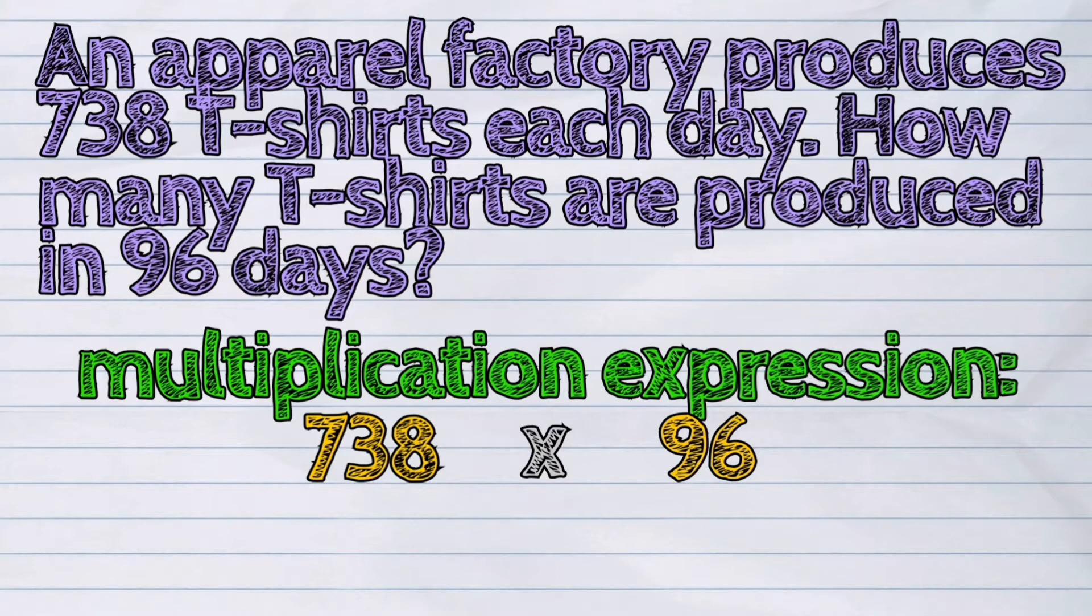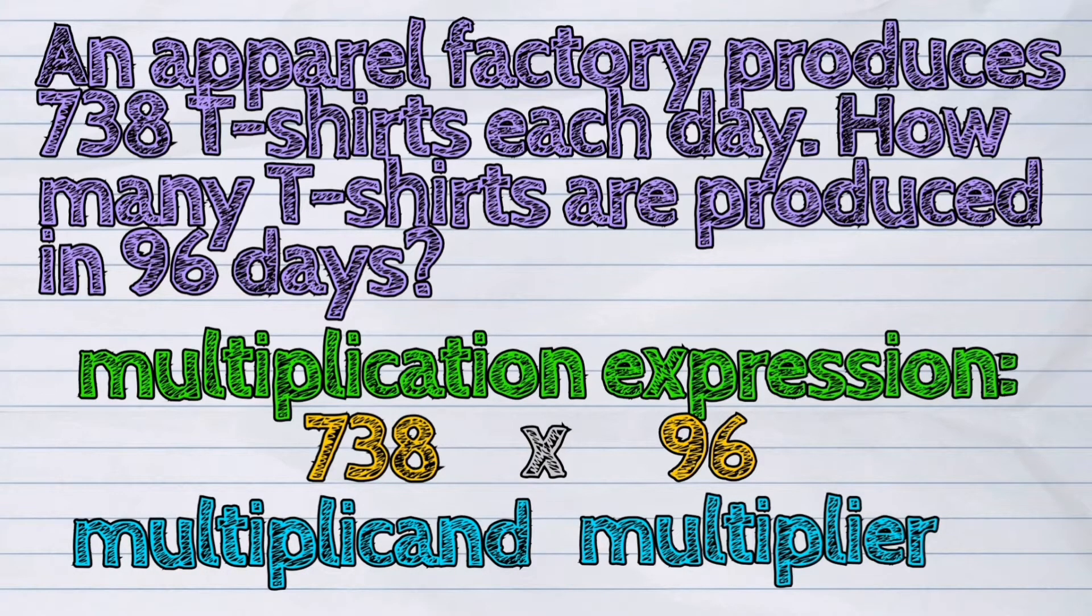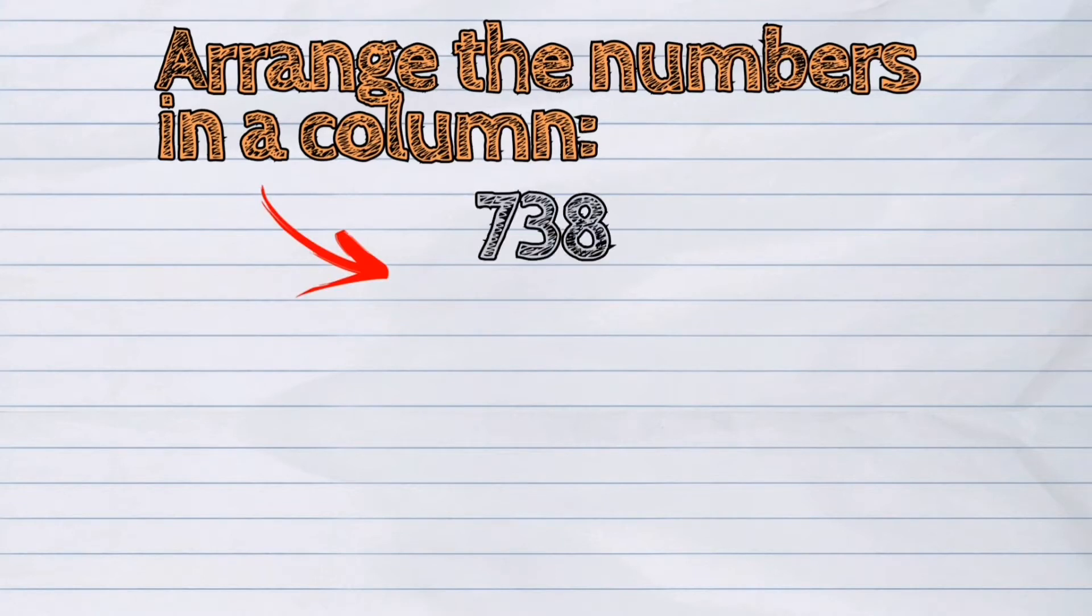738 is our multiplicand and 96 is our multiplier. First, let's arrange the numbers in a column. Place the multiplicand on top of the multiplier.